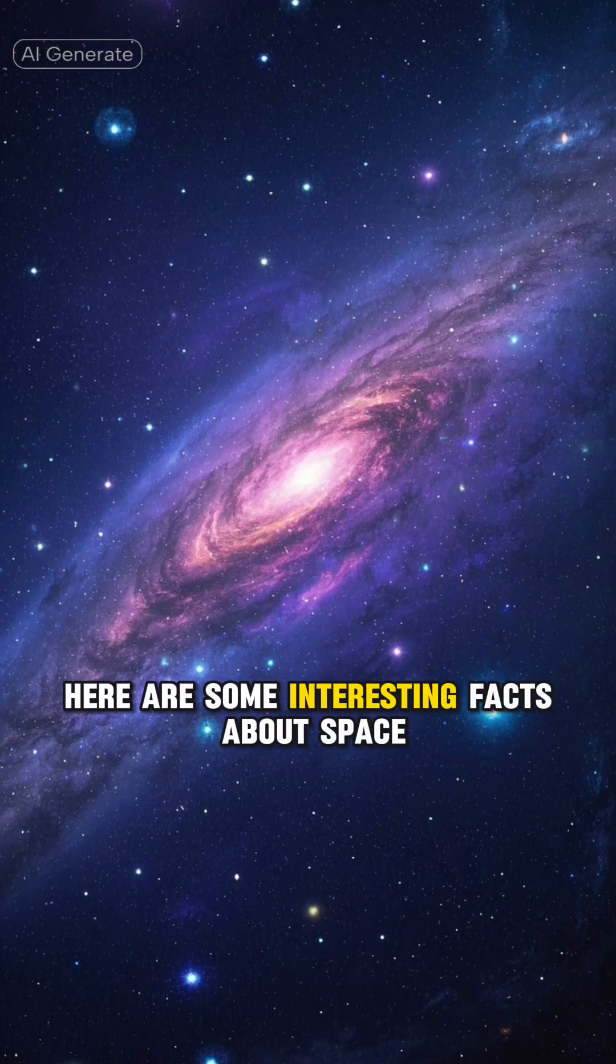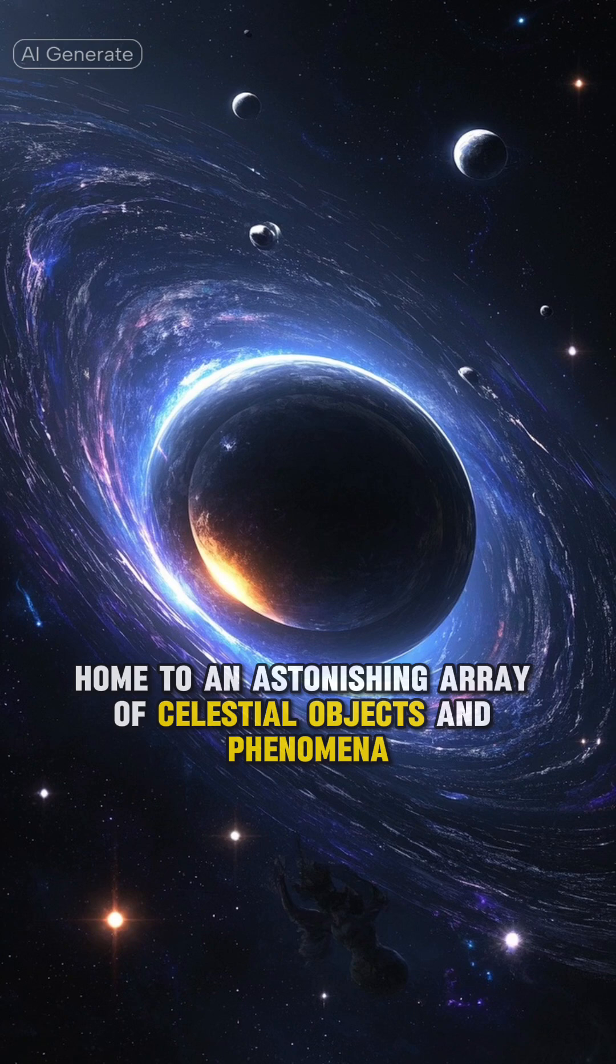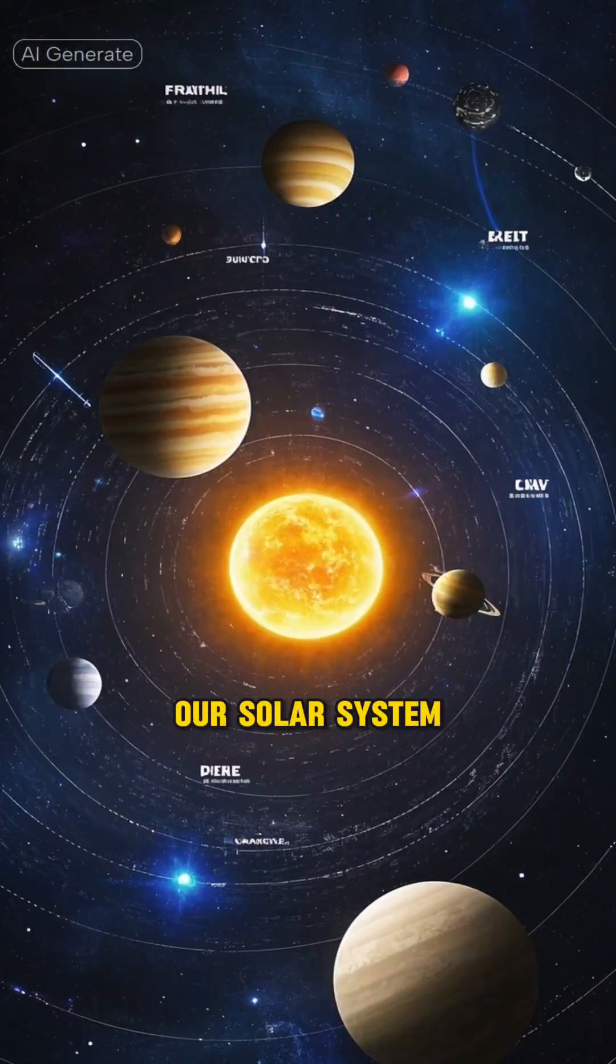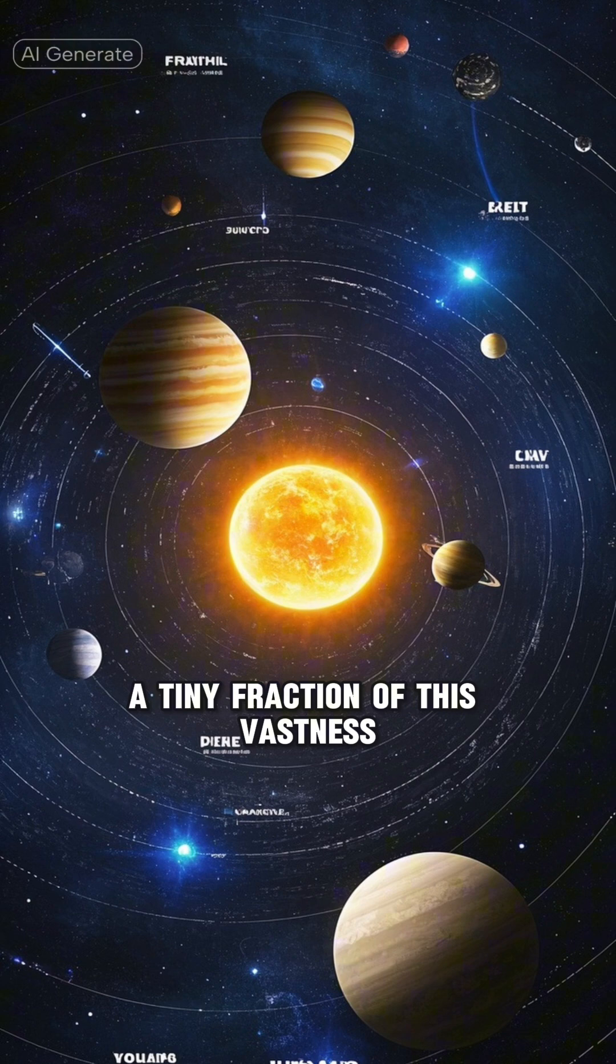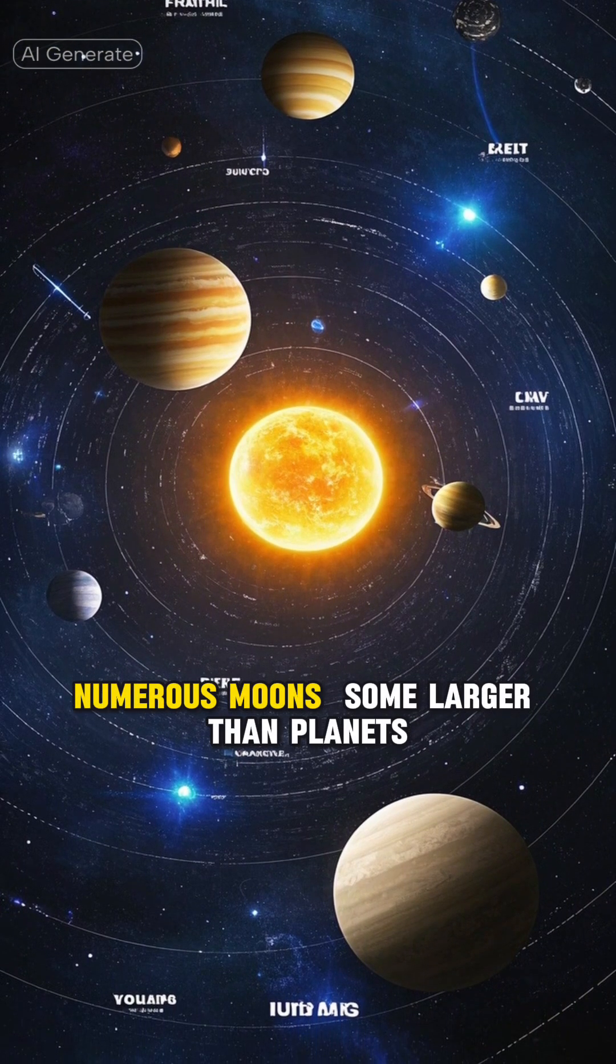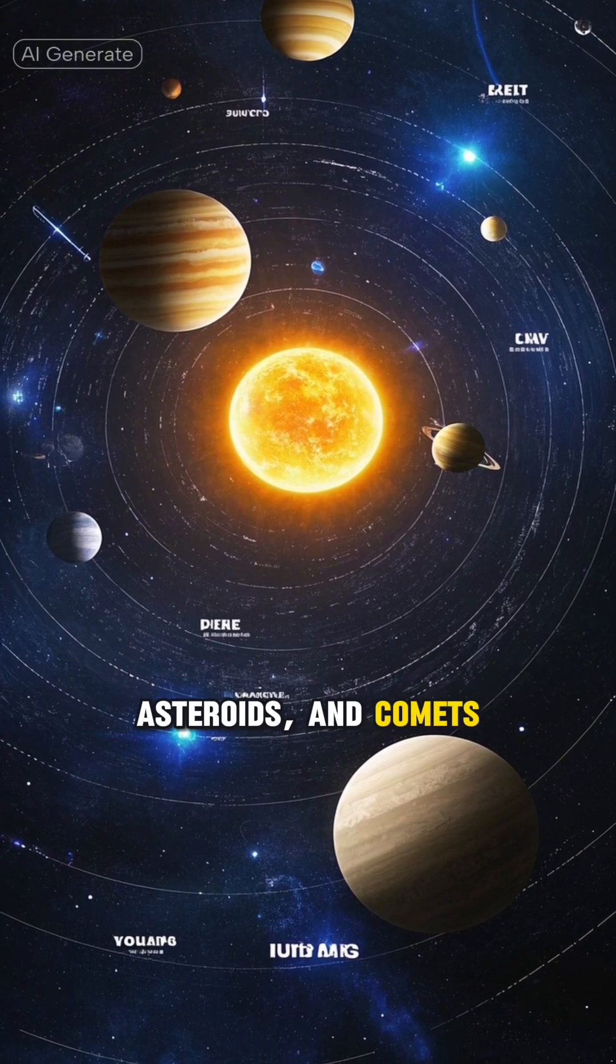Here are some interesting facts about space. Space is an immense and ever-expanding realm, home to an astonishing array of celestial objects and phenomena. Our solar system, a tiny fraction of this vastness, contains eight planets, numerous moons, some larger than planets, dwarf planets like Pluto, asteroids, and comets.